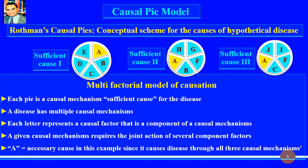Each letter — A, B, C, D, E — represents a causal factor that is a component of causal mechanisms. A given causal mechanism requires the joint action of several component factors, which are present in each pie. Letter A here is a necessary cause in this example, since it causes disease through all three causal mechanisms.